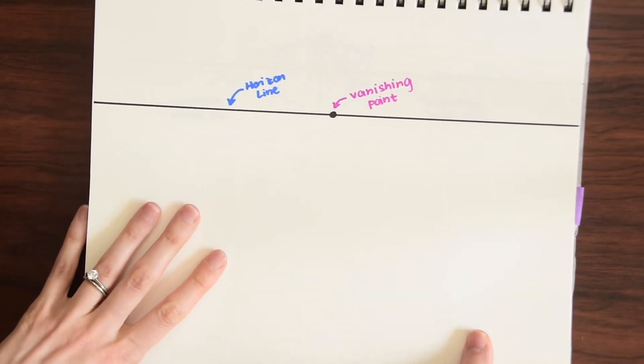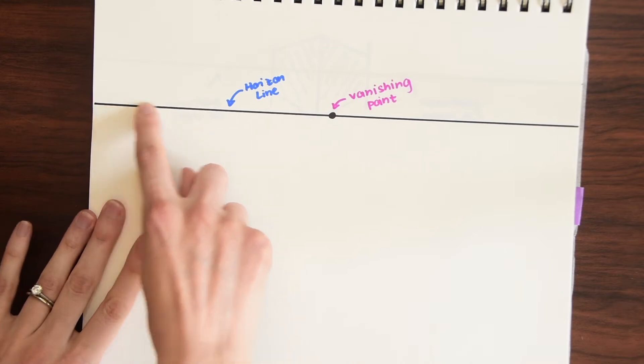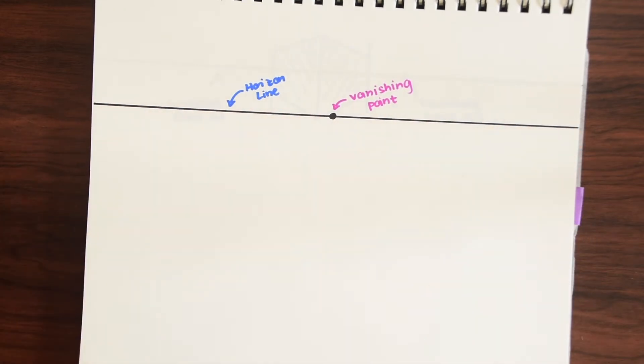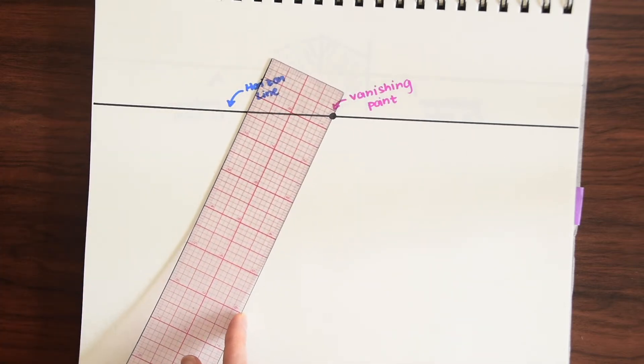So all perspective drawings have a horizon line which is just like a straight line where the land meets sky and something called a vanishing point which is where all the lines are going to be kind of directed towards. So what I mean by that is you're going to be using a ruler and if we wanted to draw a road we would base it on this point right here.